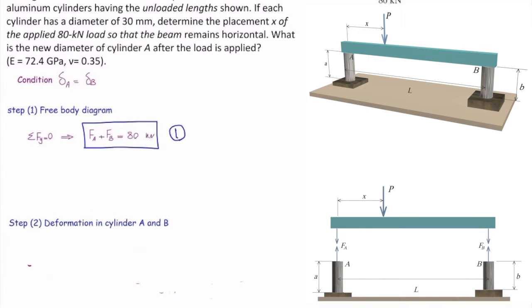Now let me write down deformation in cylinders A and B as a function of force. Let's do that for A and B separately. Delta A is F_A, the force in cylinder A, times 220, which is the length of cylinder A, divided by EA.